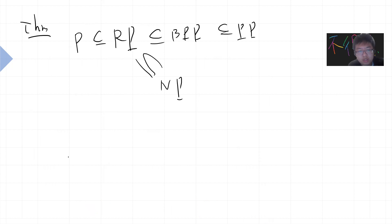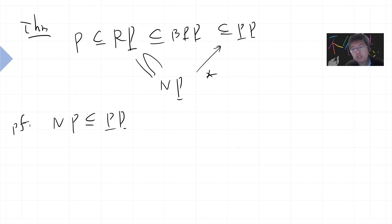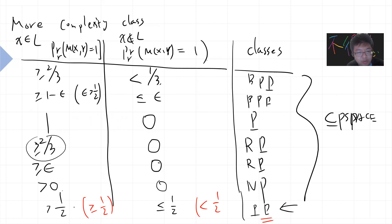Another interesting proof: NP is a subset of PP. PP is a probabilistic Turing machine where the probability of outputting one is strictly greater than half.